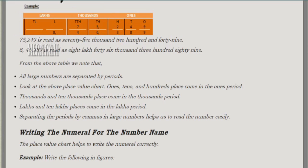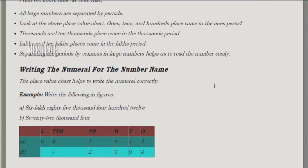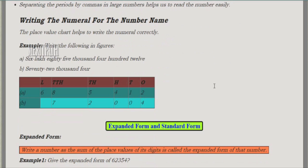All the numbers are separated by commas. After the hundreds place we place a comma, and after the ten thousands place we place another comma. In this manner we separate all the periods by commas, so that we can easily identify each period in a large number.